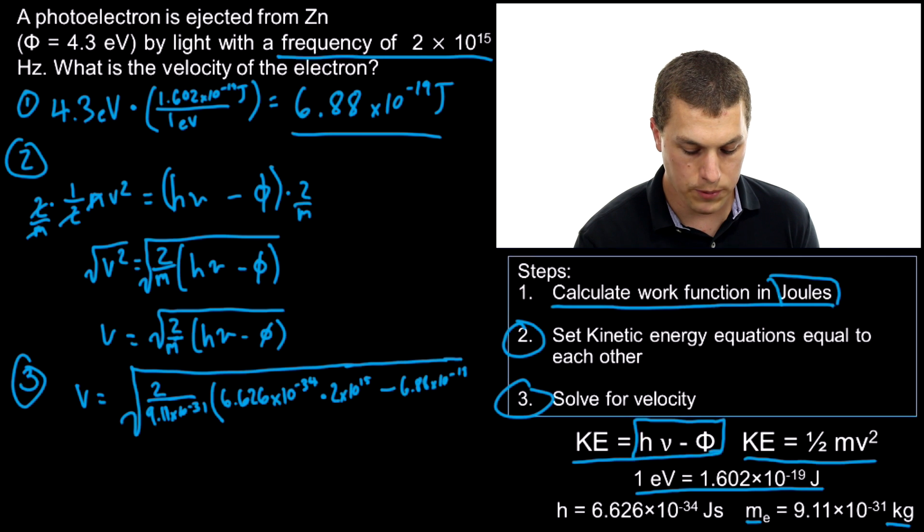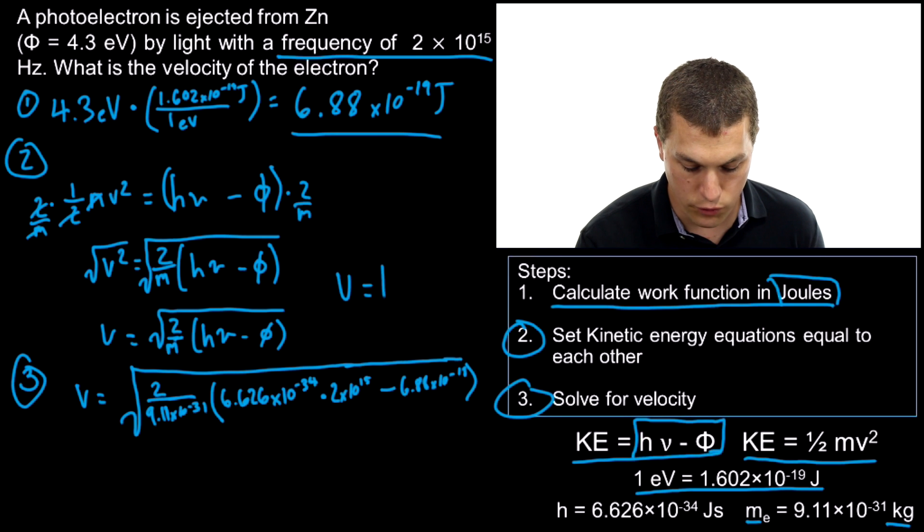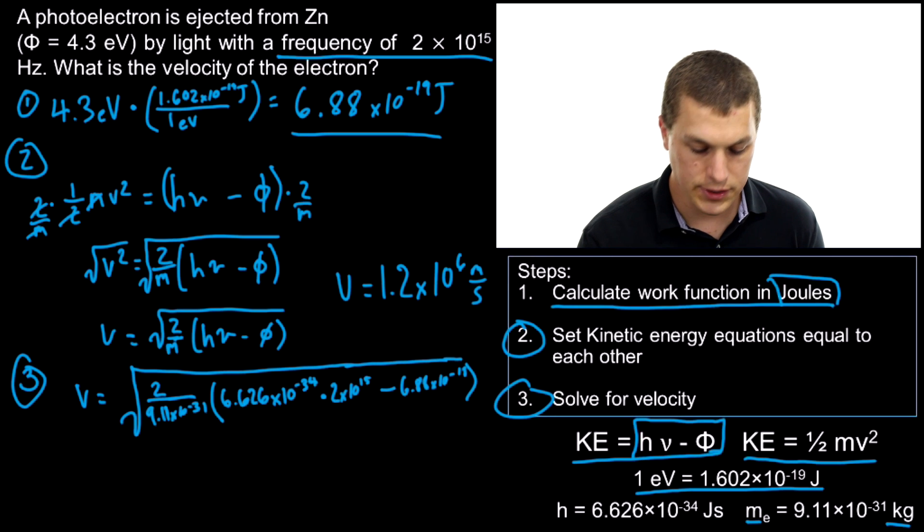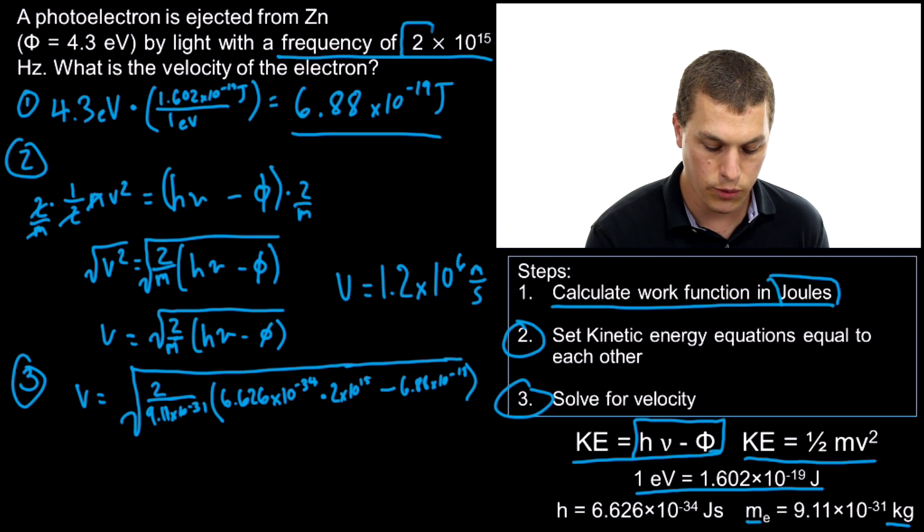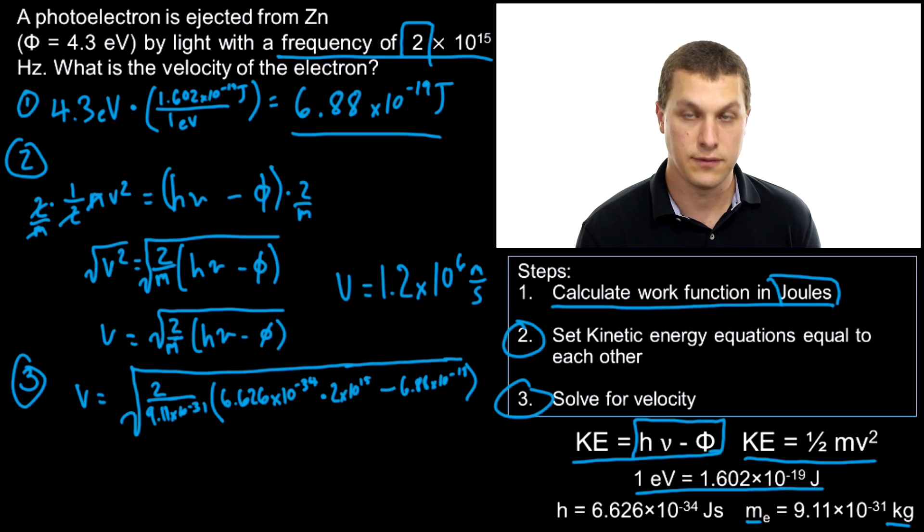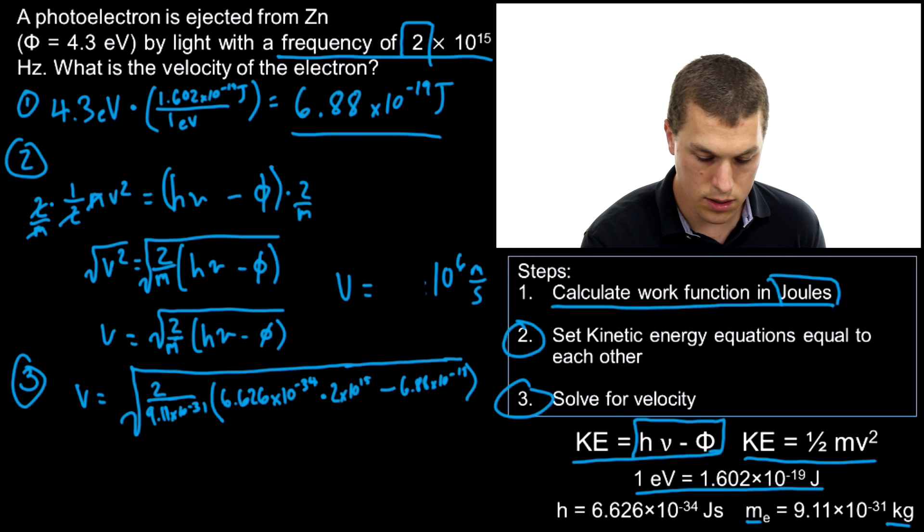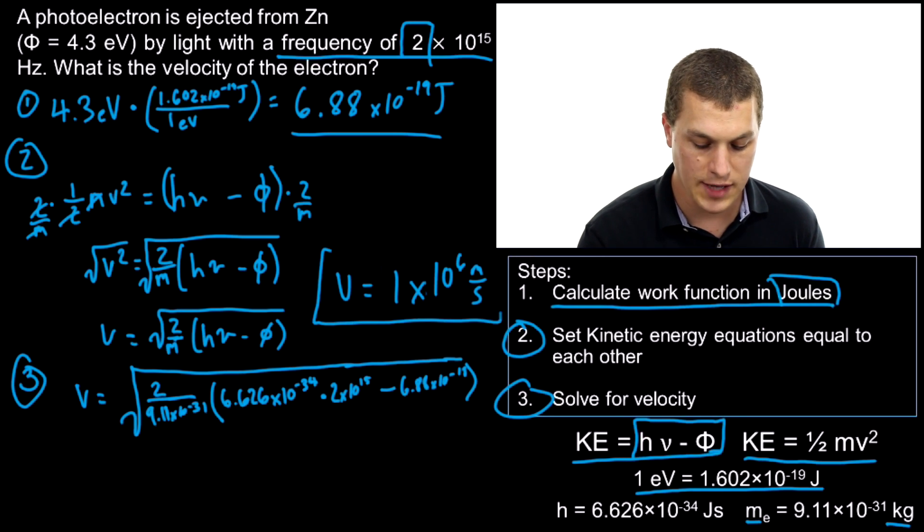When we plug that all in our calculator, we're going to get our velocity. I plug it in my calculator, and what I get is 1.2×10⁶ m/s. Actually, since our frequency up here has only one sig fig, our answer should only have one sig fig. That means we're going to drop off that .2, and leave it as 1×10⁶ m/s. That's our velocity.